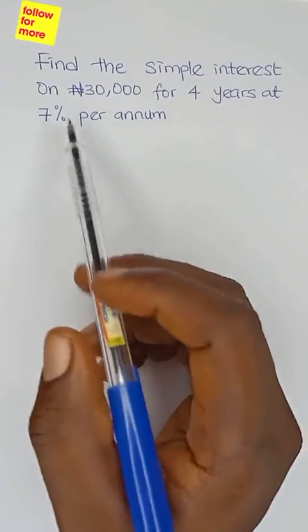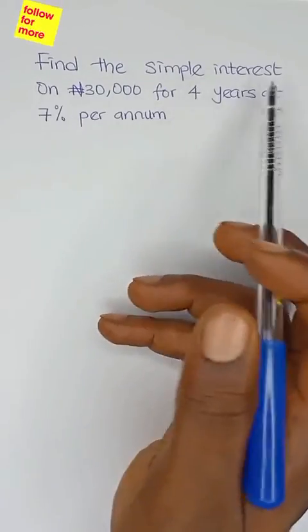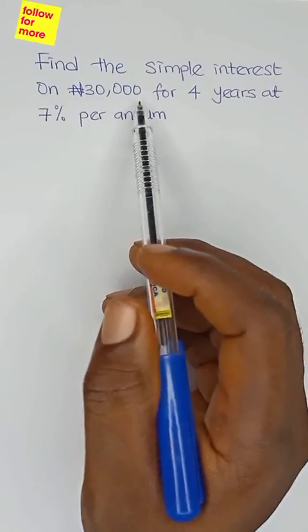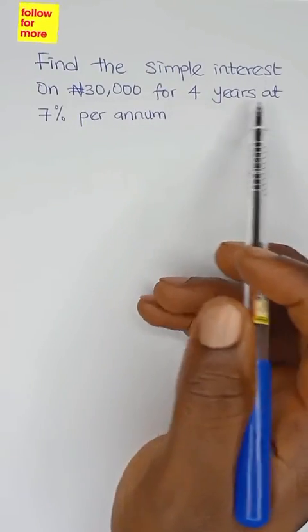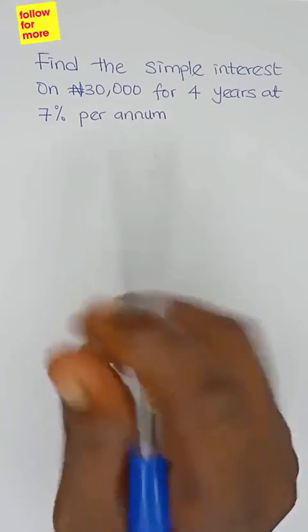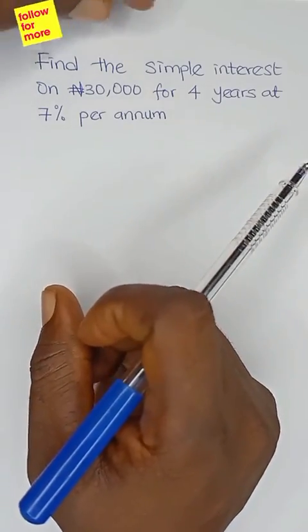Hi guys, let's look at this simple question. We are told to find the simple interest on ₦30,000 for four years at 7% per annum. So we're expected to calculate the simple interest on this amount.